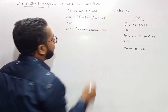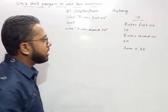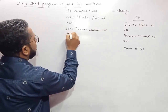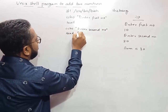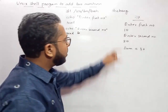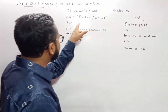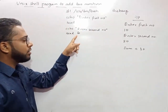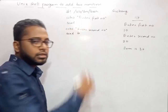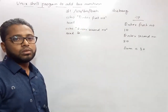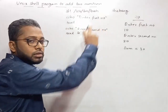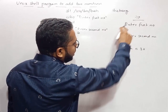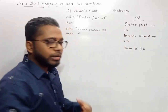For the second number, we use the same approach: echo "Enter second number", then read b. Now 10 gets stored inside a and 20 gets stored inside b.